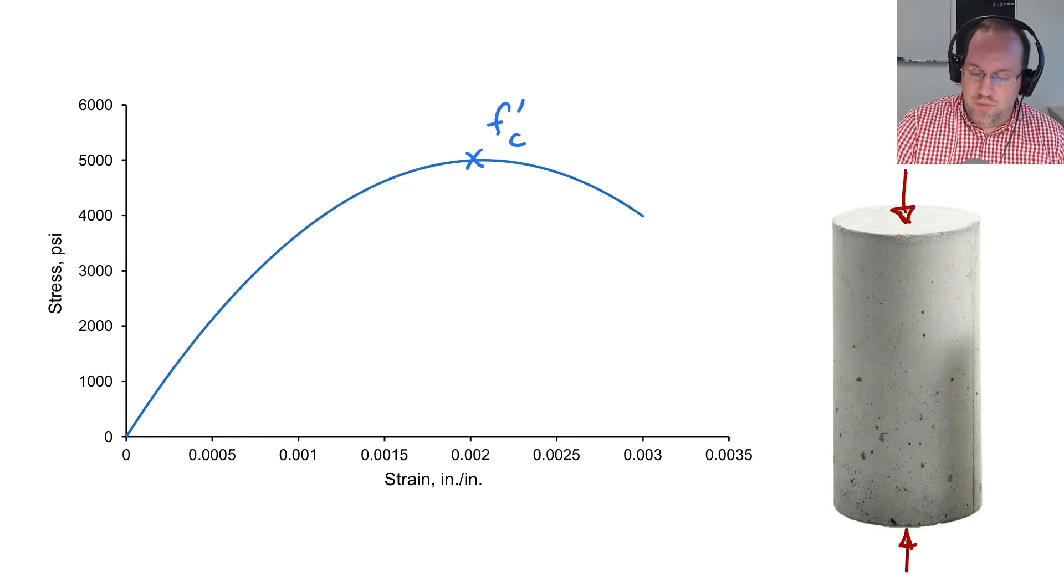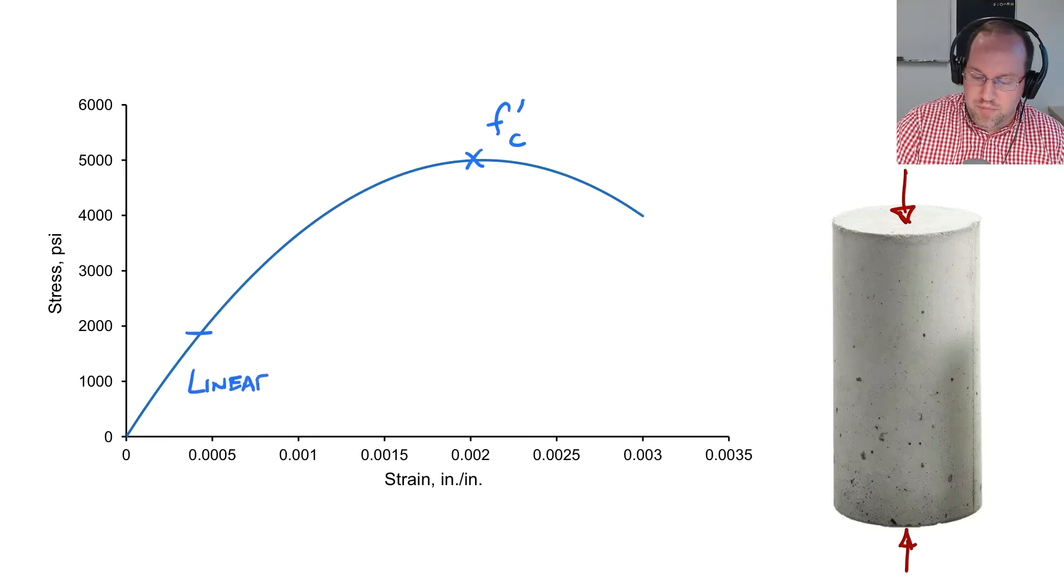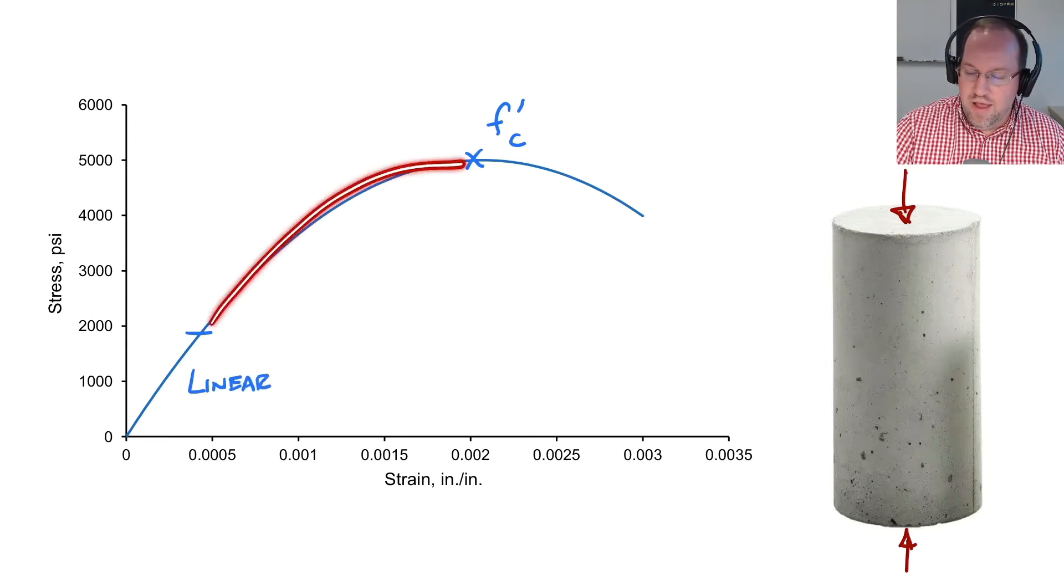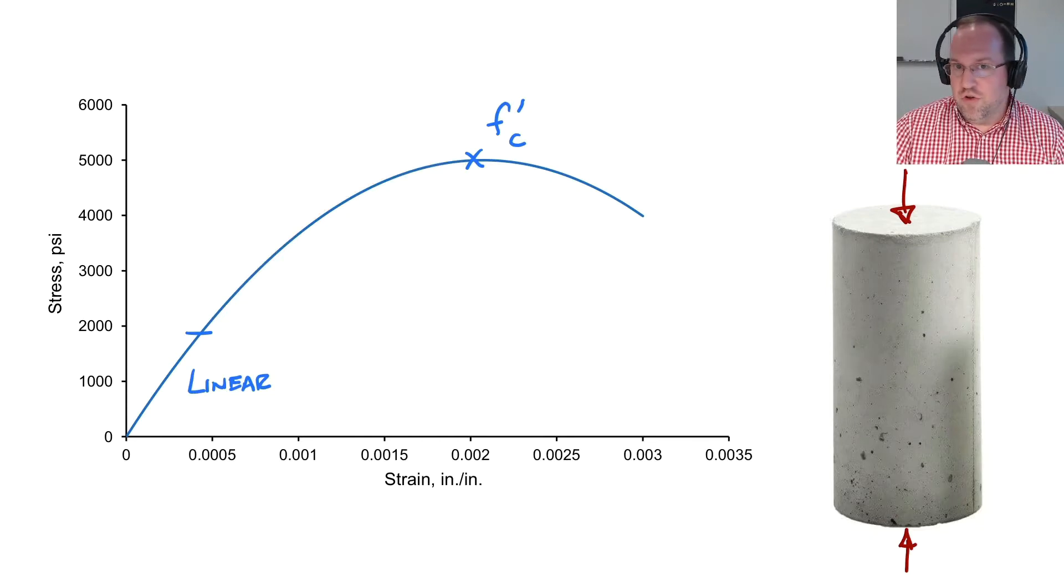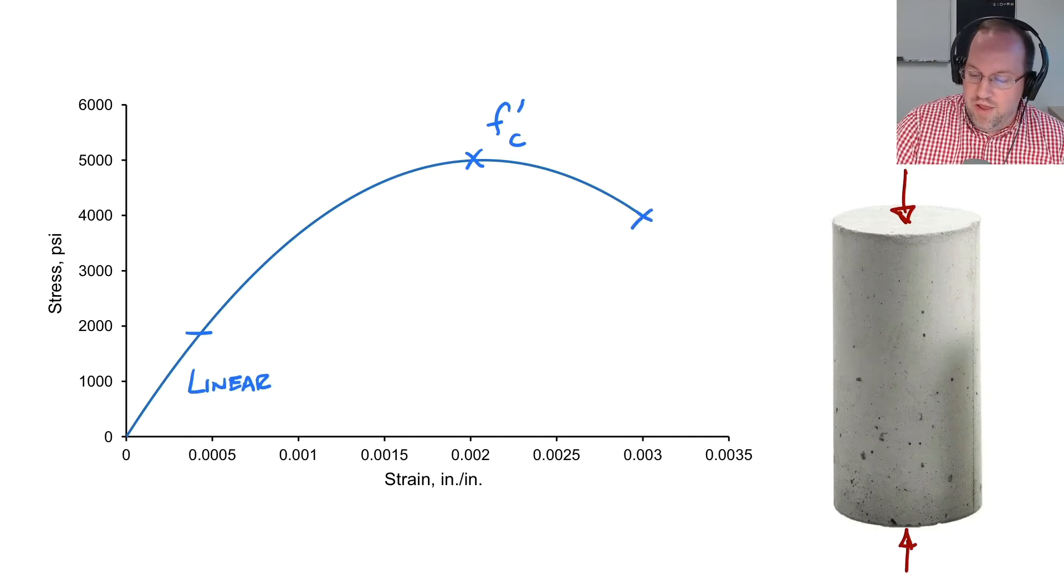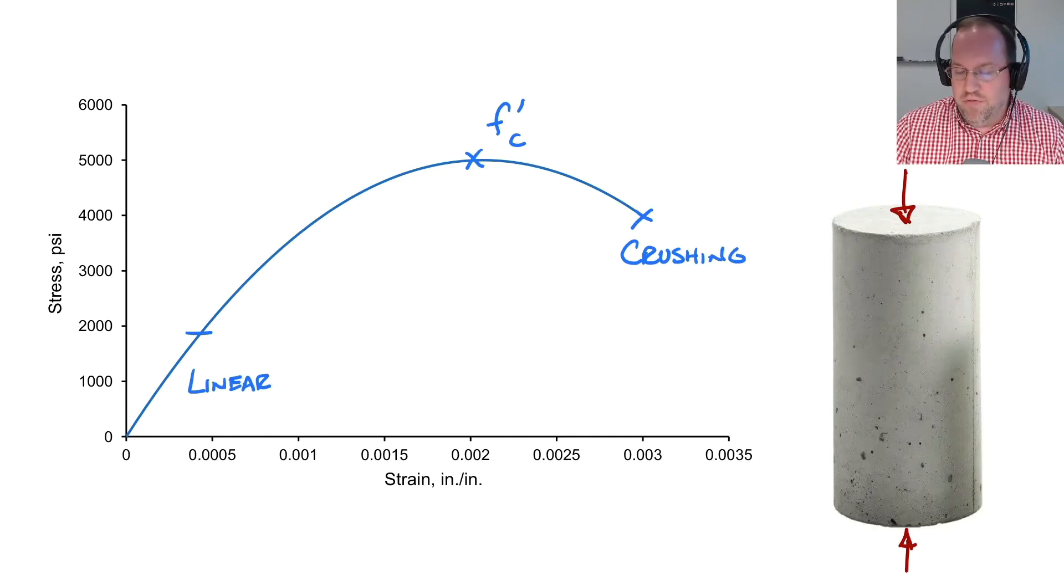Now prior to the compressive strength we have a linear region that goes up to roughly 40 percent of f prime c and then a non-linear region right here, and then after the peak this is behavior known as softening where my stress is actually decreasing with increasing strain and it will fail at an ultimate strain known as the crushing strain right here. Now this ultimate strain, if we look in for example ACI 318-19, is defined at a strain of 0.003. Now that can vary a little bit depending on your concrete but it's a pretty good ballpark number for virtually all forms of concrete.